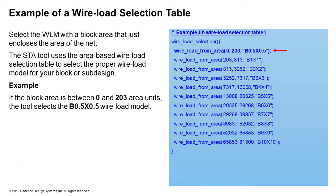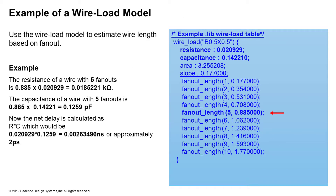This example shows the wire load selection table: if the block area is between 0 and 203, the tool selects the B.5.5 wire load model. The actual wire load model includes resistance multipliers and capacitance multipliers, and RC is calculated based on the capacitance of the wire times the resistance of the wire.